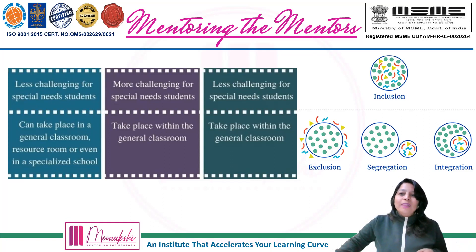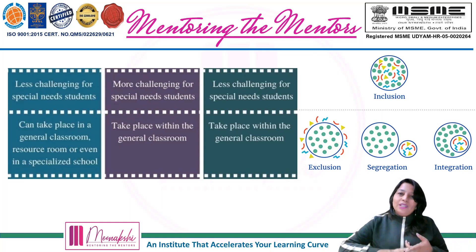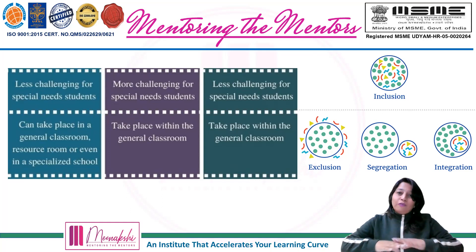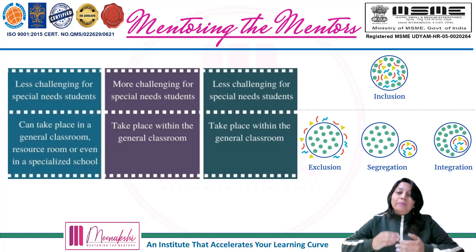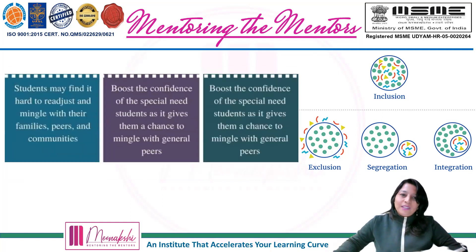As you can see here also — inclusion. At the top, that image. Sab ik saath milkar, they are enjoying. No discrimination. Jaise hum kehte hain jaat, pat, rang, roop — iske taraf koi vibhedbhav nahi hai. Waisa hi inki abilities or disabilities ke according, koi discrimination nahi hota in inclusive education.